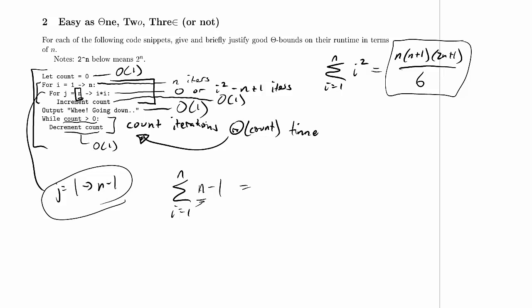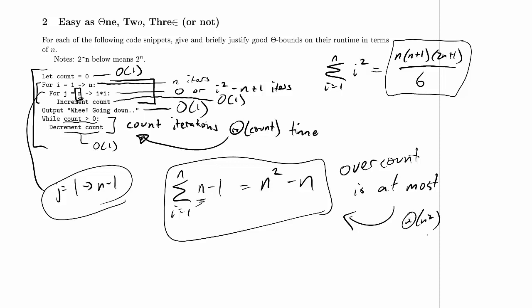And that's just equal to, we can do these parts separately, the summation i equals 1 to n of n is just n squared. And the summation i equals 1 to n of negative 1 is negative n. So our overcount is at most this quantity, and that is asymptotically n squared. Whereas this is asymptotically n cubed, and so this doesn't matter.